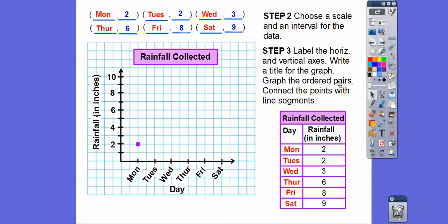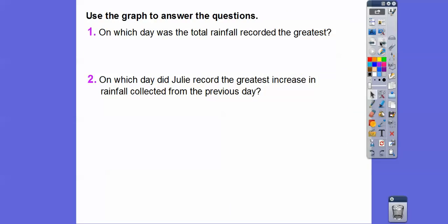All right, and then now it says graph the ordered pair. So here's Monday comma 2. I did that right there. Monday comma 2. Tuesday comma 2. Here's Tuesday comma 2. Here's Wednesday comma 3. Thursday comma 6. Friday comma 8. Finally, Saturday comma 9 right there. And now we're going to connect them. There they are connected right there. And then let's analyze this graph.